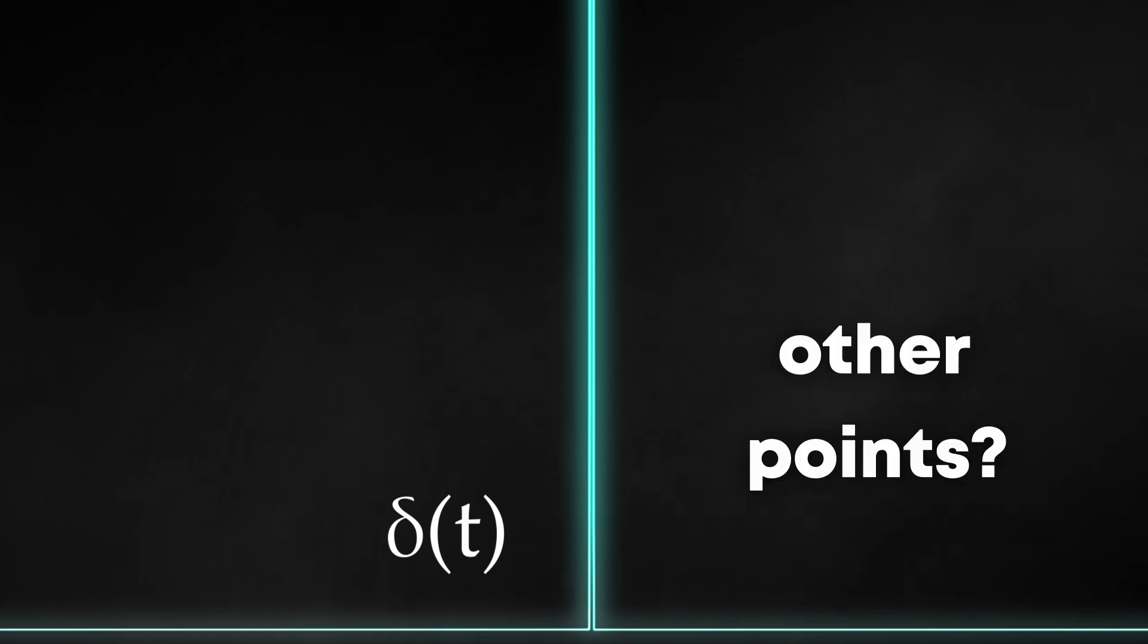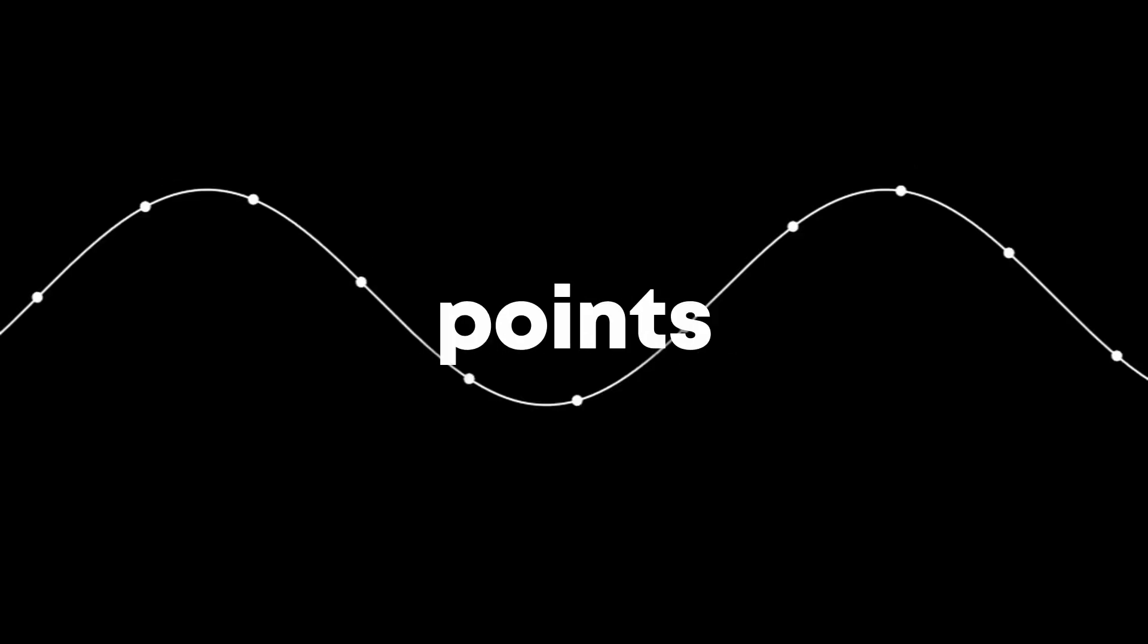How do you get other points? You shift the delta function by subtracting the time you want to move by. The amazing property of the delta function is that it turns the whole function into a point. Taking multiple points by using the shifting property, we can get back our function at multiple points.